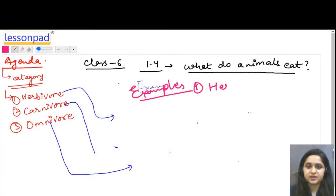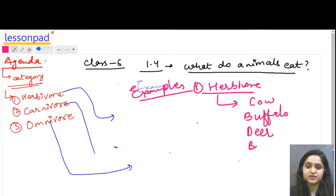First we have herbivore. Examples of herbivore animals are cow, buffalo, deer, some birds, and rabbit. These are all examples of herbivore because they eat plant products.